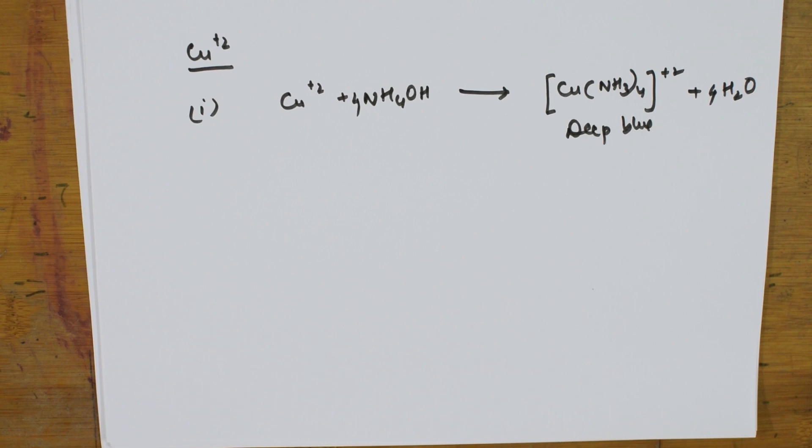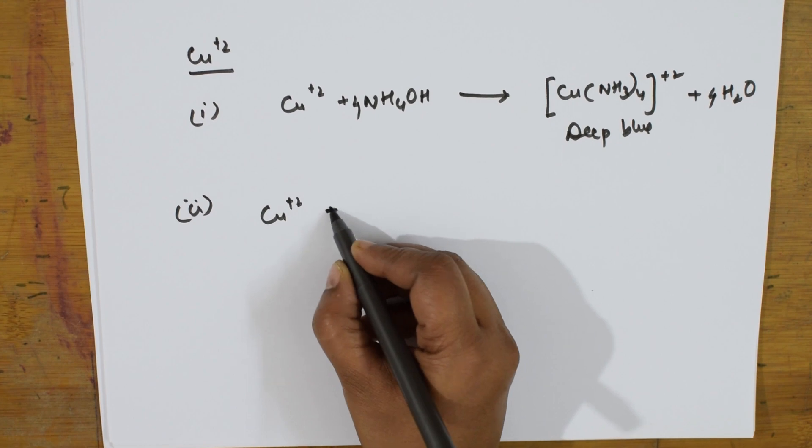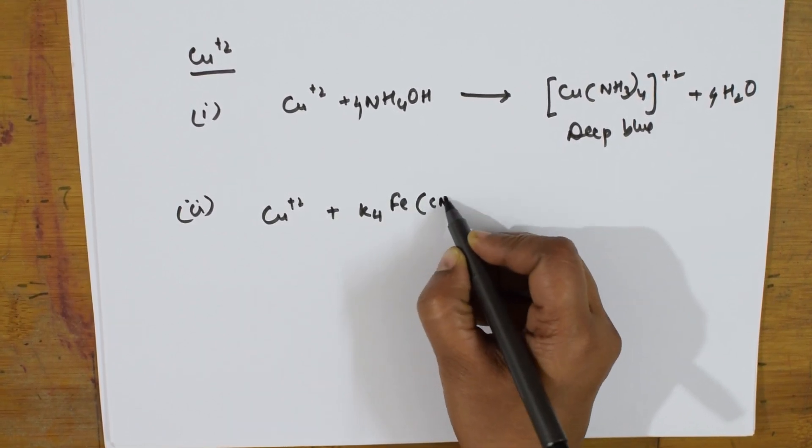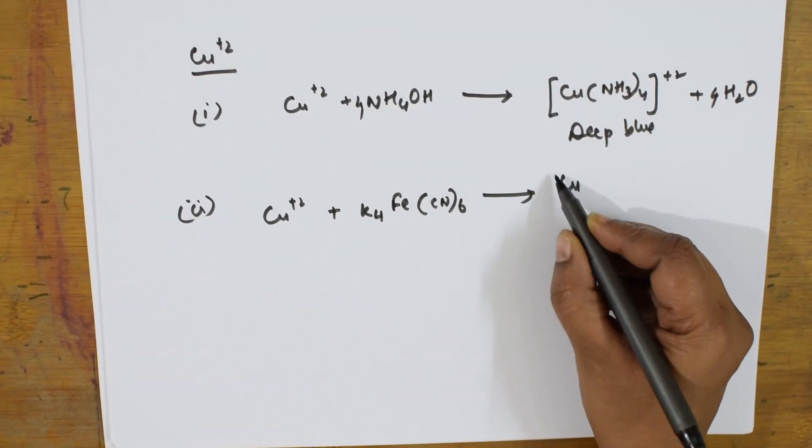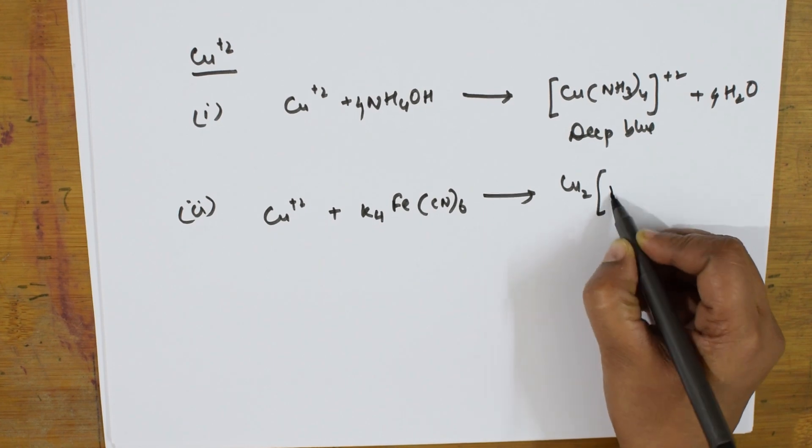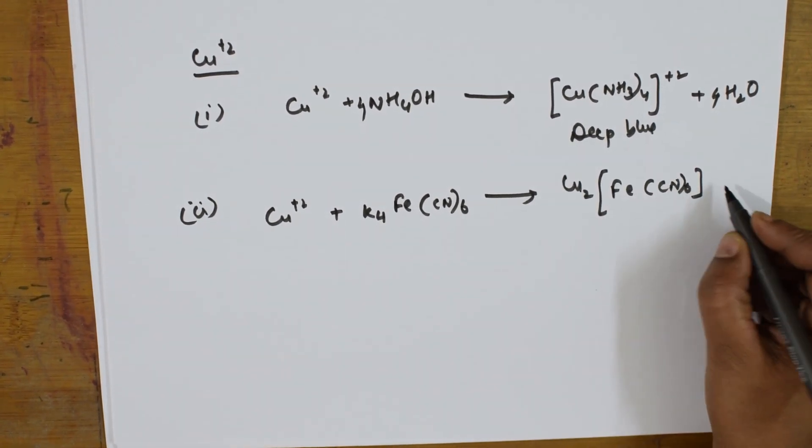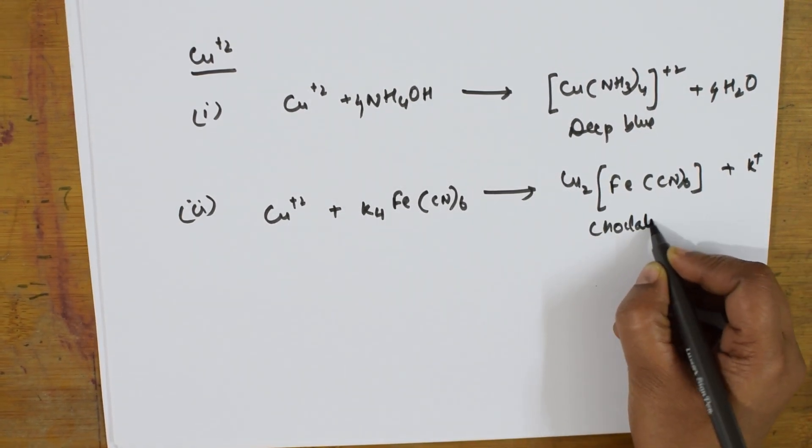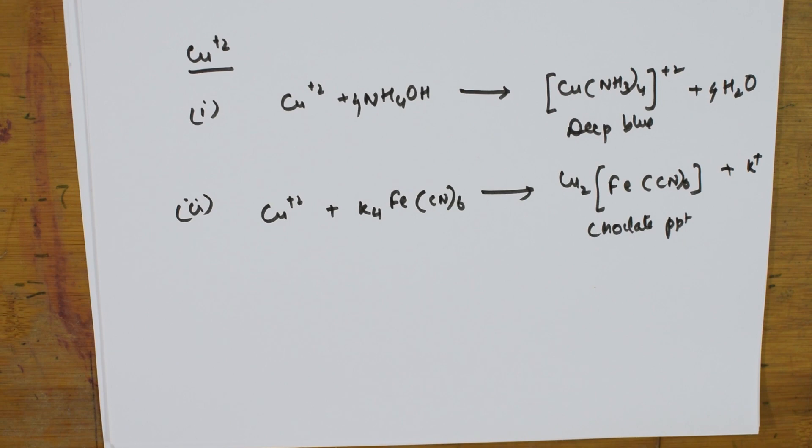You can also take this salt solution and you can add potassium ferrocyanide to this. When you add potassium ferrocyanide, it is again going to form a coordinate covalent complex. What is the color of that? The color of this is chocolate precipitate.